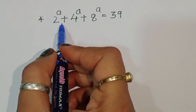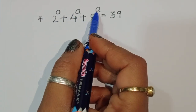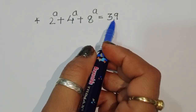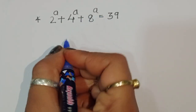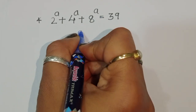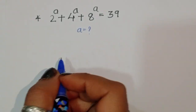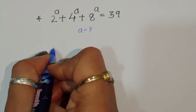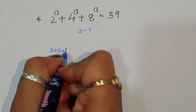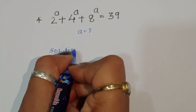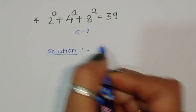The question is: 2 power a plus 4 power a plus 8 power a is equal to 39. We have to find out the value of a here. Let's see the solution — how we can find out the value of a in this equation. So let's start the solution.